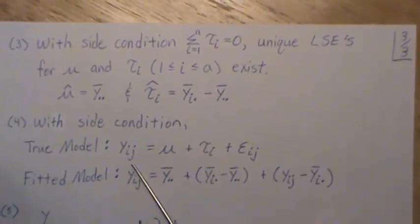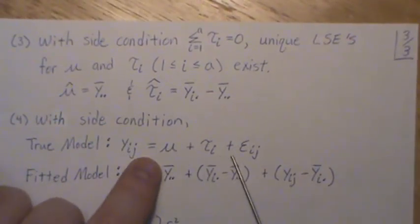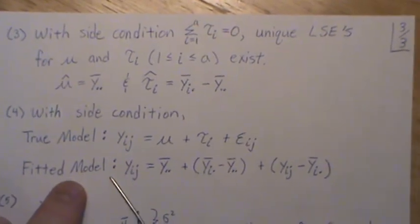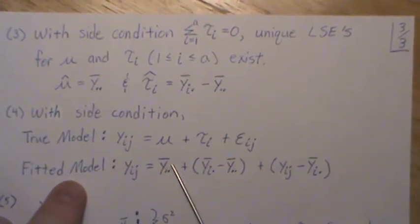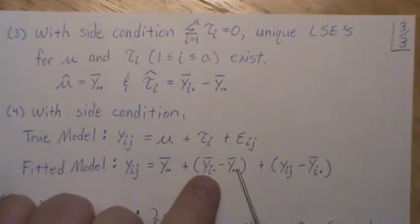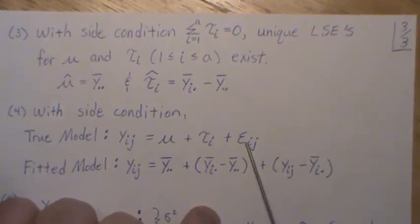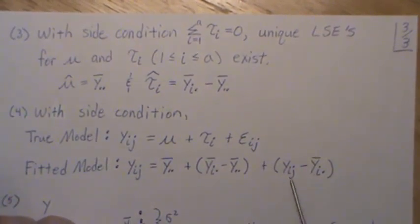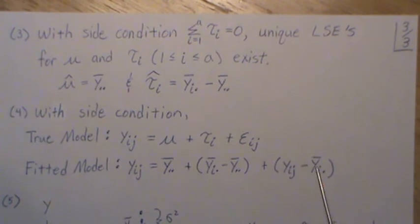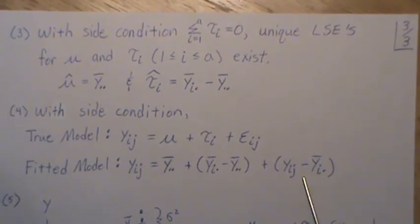The ith τ is estimated with the sample ith group mean minus the overall grand mean. So with the side condition, the model becomes, the true model is this. But then the fitted model, you fit with the grand mean. This is estimated with this. And the error term would be estimated with the observations minus the ith group mean.